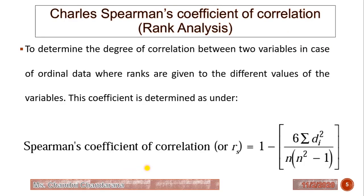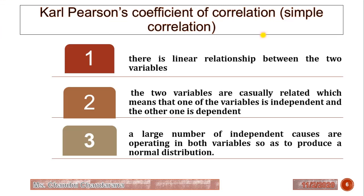The next is Charles Spearman's coefficient of correlation, also known as rank analysis. Here we determine the degree of correlation between two variables in case of ordinal data, where ranks are given to the different values of the variable. This coefficient is determined by the equation rs — Spearman's coefficient of correlation — which is why the other name is rank analysis.